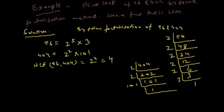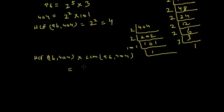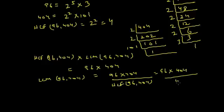Now using the relationship we proved earlier: HCF of 96 and 404 multiplied by LCM of 96 and 404 equals the product of the two numbers. So LCM of 96 and 404 = 96 × 404 ÷ HCF = 96 × 404 ÷ 4 = 96 × 101 = 9696. So this is the LCM.